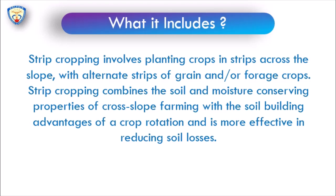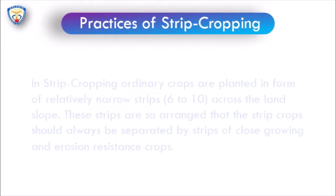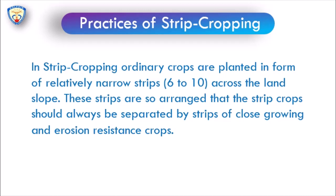Strip cropping involves farming with soil building, advantages of crop rotation, and is more effective in reducing soil losses. It reduces soil losses, conserves soil moisture, and helps in both wind and water eroded areas. As a technique for erosion control, it is most effective in certain soils and topographies, especially where terraces are not practically feasible.